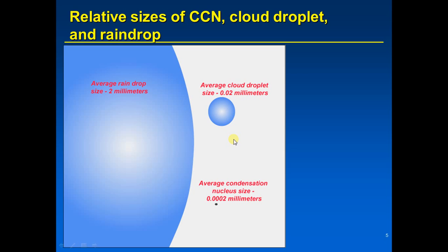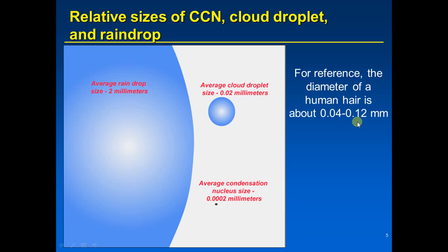The average cloud droplet is far too small to fall out of the cloud — it falls very slowly and evaporates, usually not making it far below the cloud. For reference, the diameter of a human hair is about 0.04 to 0.12 millimeters, which is roughly two to six times the diameter of the average cloud droplet.